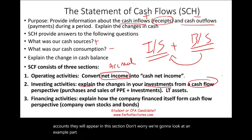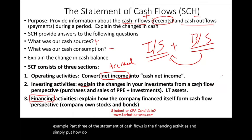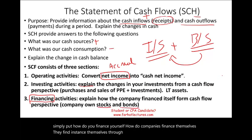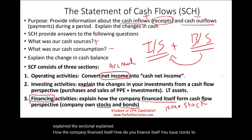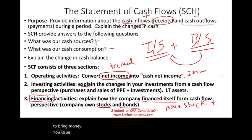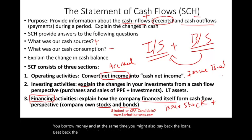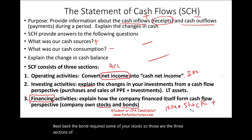Part three of the statement of cash flows is the financing activities. Simply put, how do you finance yourself? Companies finance themselves through their own stocks and bonds. This section will explain how the company financed itself — you issue stocks to bring money, you issue bonds, you borrow money. And at the same time, you might also pay back the loans, pay back the bond, or reacquire some of your stocks.